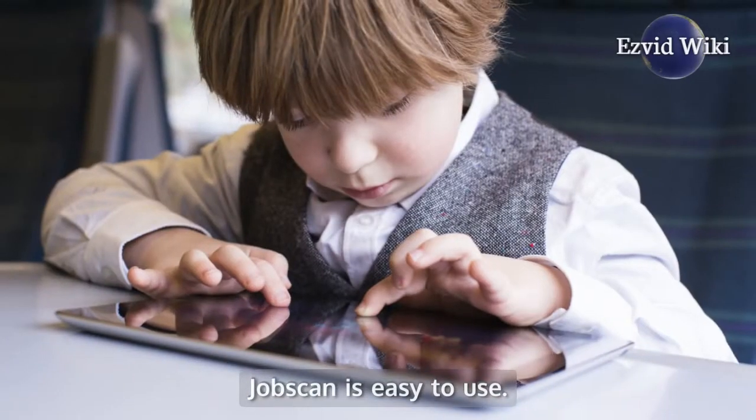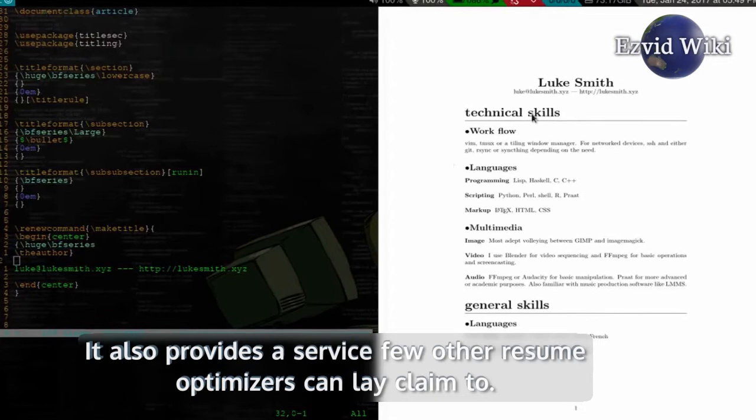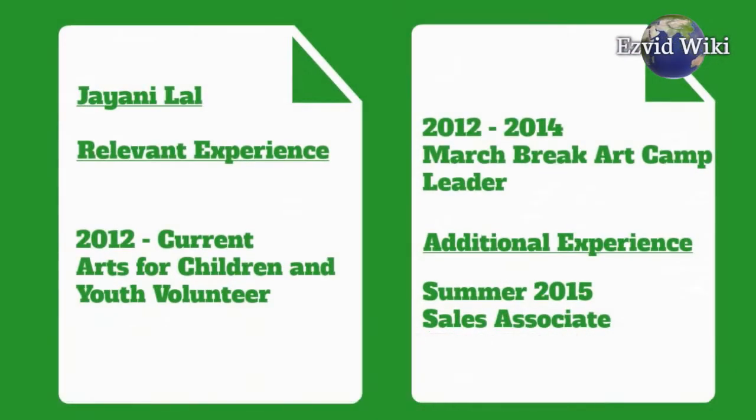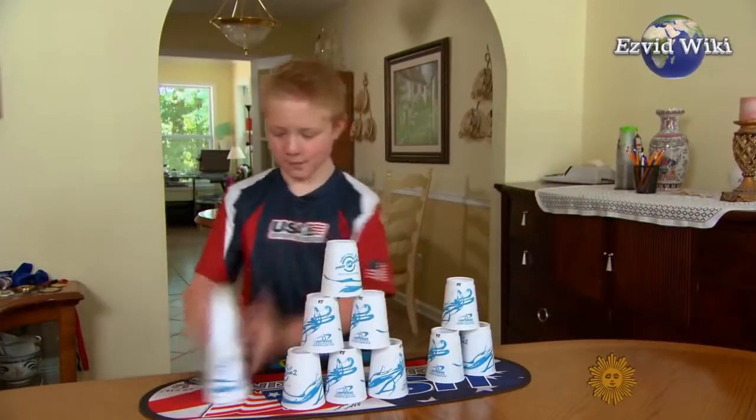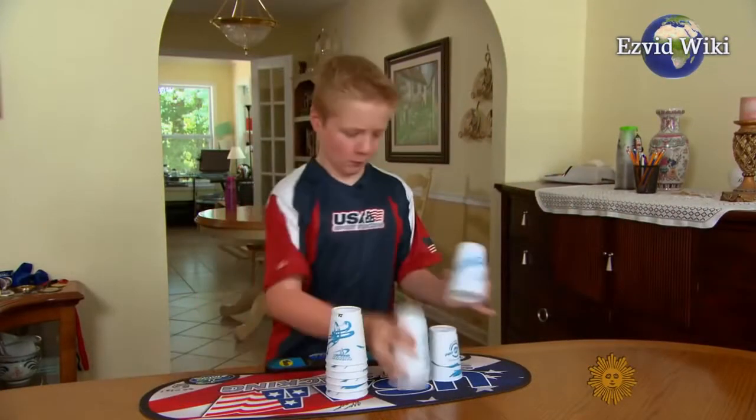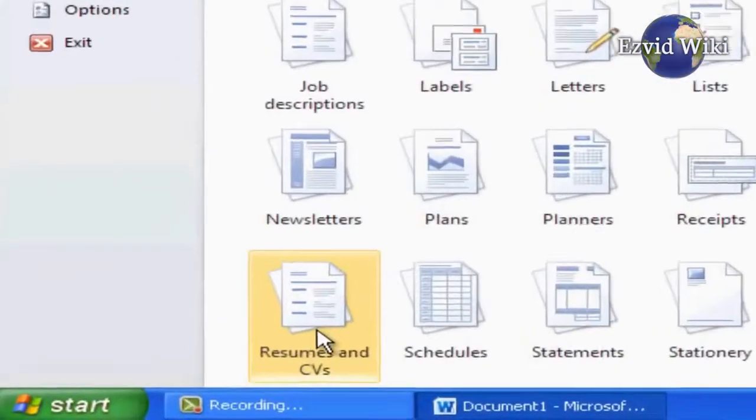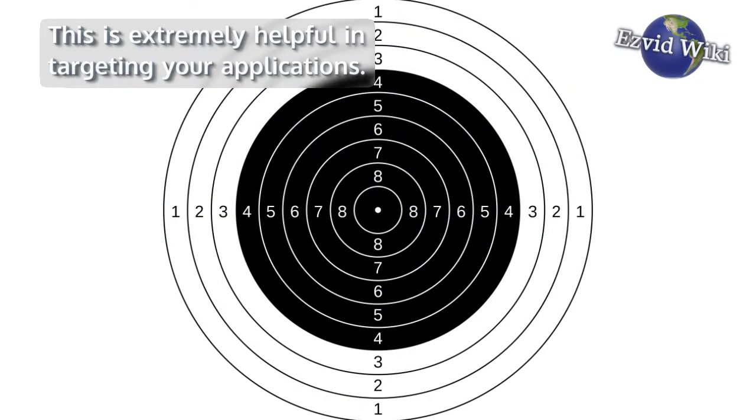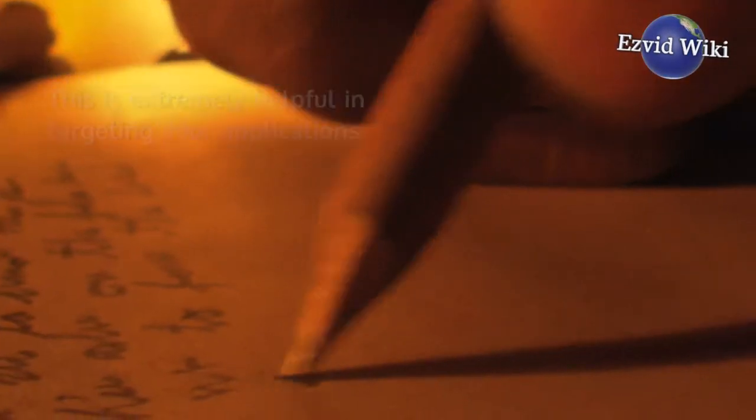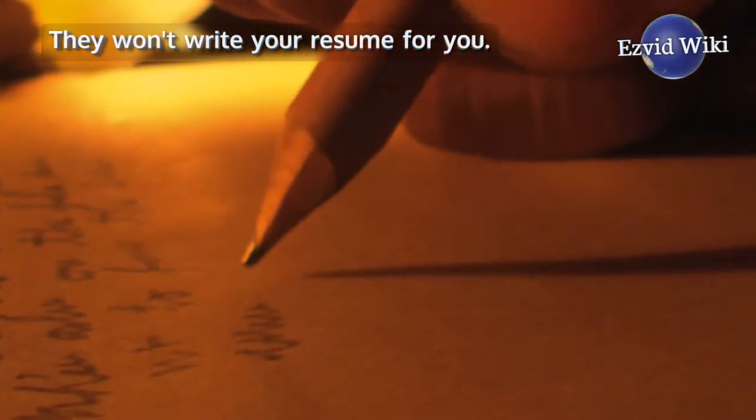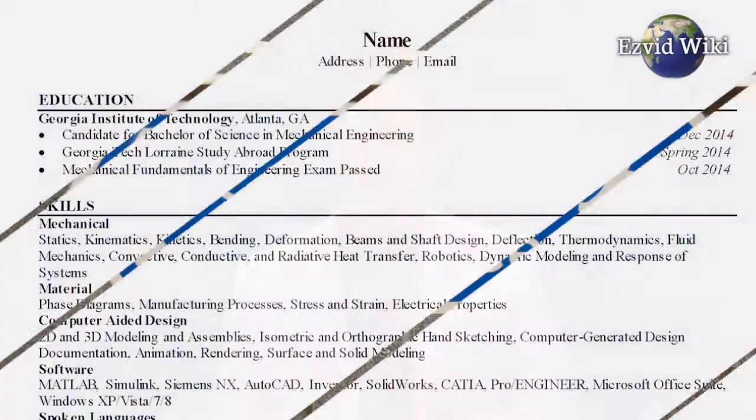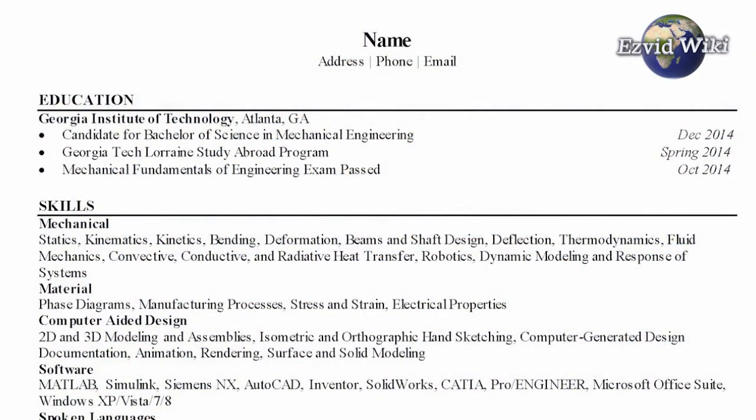Jobscan is easy to use. It also provides a service few other resume optimizers can lay claim to. They use a particular method to break down the skills highlighted in your resume. They then compare these to the skills marked as relevant to the position you're applying for. This is extremely helpful in targeting your applications. They won't write your resume for you. But if it's not getting picked up by automated tracking systems, nothing else matters. Their guidance has proven to help applicants move on to the next stage in the hiring process.